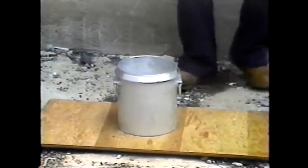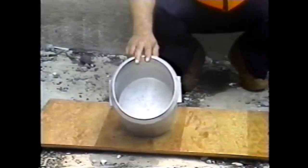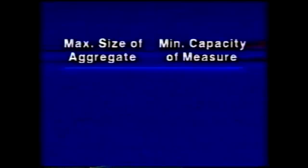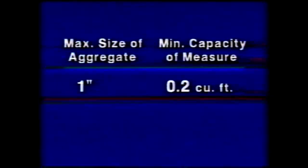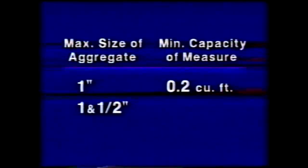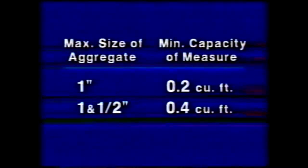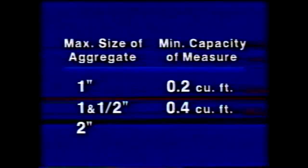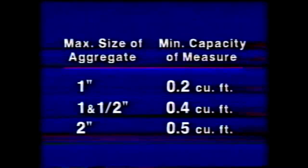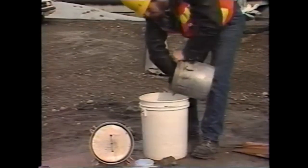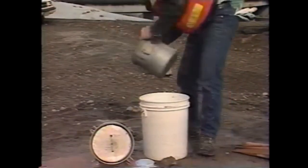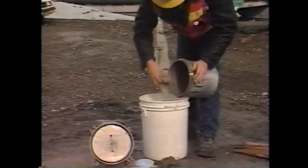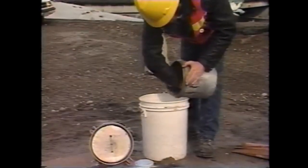The measure must be a watertight cylindrical container whose capacity depends on the size of aggregate used. For one-inch maximum size aggregate, a measure with a minimum capacity of two-tenths cubic foot should be used. If the aggregate has a maximum size of one and a half inches, the minimum capacity should be four-tenths cubic foot. For two-inch maximum size aggregate, the minimum capacity should be five-tenths cubic foot. Since the air content meter's bowl has a capacity of two-tenths cubic foot, it can be used as the measure when the concrete contains one-inch maximum size aggregate.